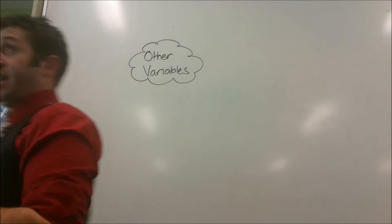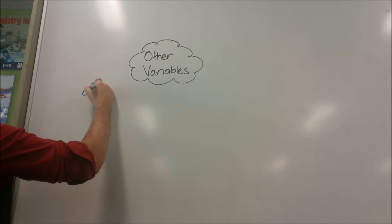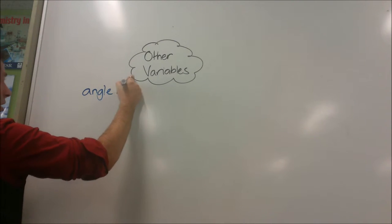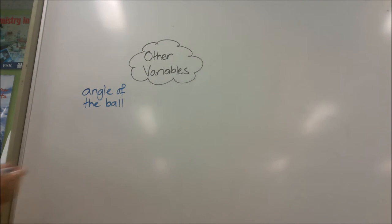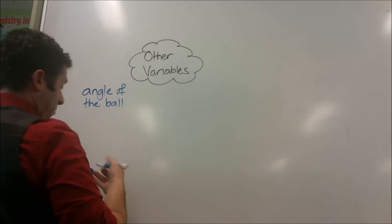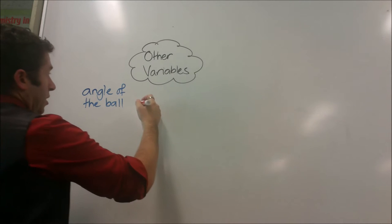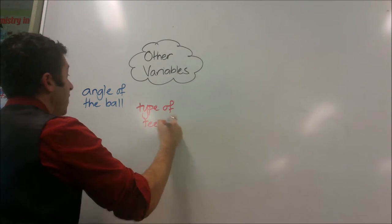Okay, so the angle of the ball on the tee, yep. And then you've also just said something there, on the tee. So what, the type of tee, have any effect? Yeah, so the type of tee and the fact that we're doing place kicks not drop kicks or punts or anything like that as well. So the type of kick.